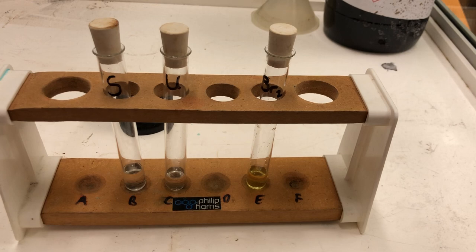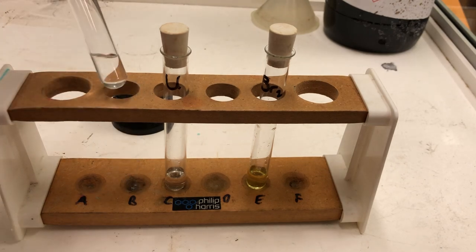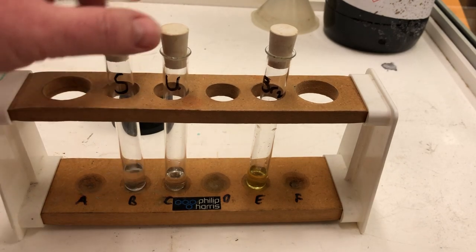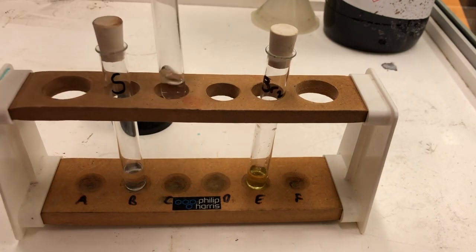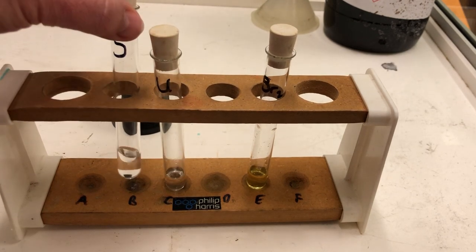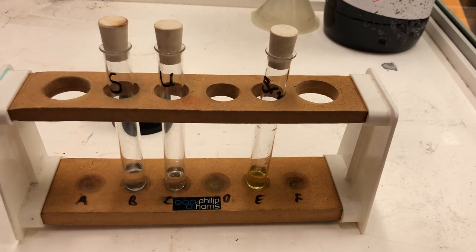I will turn on the fume cupboard. It will make a loud noise and I will not be speaking while we add the bromine water to the saturated hexane and the unsaturated hexene. Note hexane and hexene are both clear and colorless liquids.